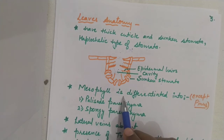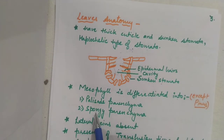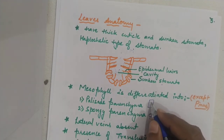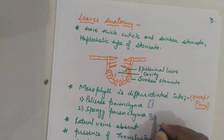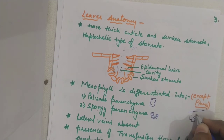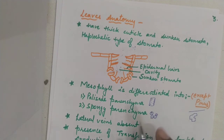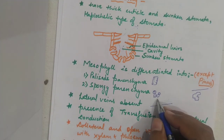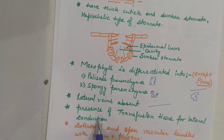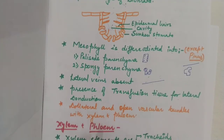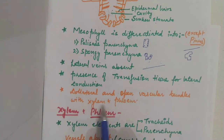Mesophyll tissue performs photosynthesis and is differentiated into palisade and spongy parenchyma. However, in Pinus, where leaves are needle-like, there are special star-shaped cells; palisade and spongy parenchyma are absent. Lateral veins are absent and only a single mid vein is present, so transfusion tissue is present for lateral conduction of water. There are collateral and open vascular bundles with xylem and phloem.